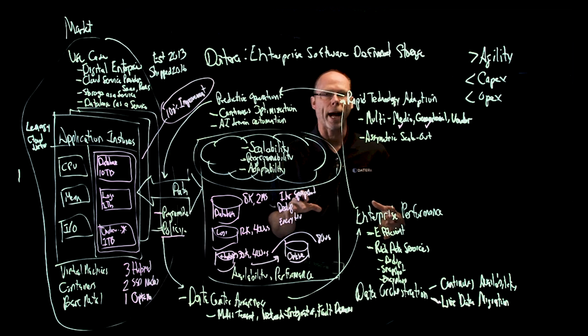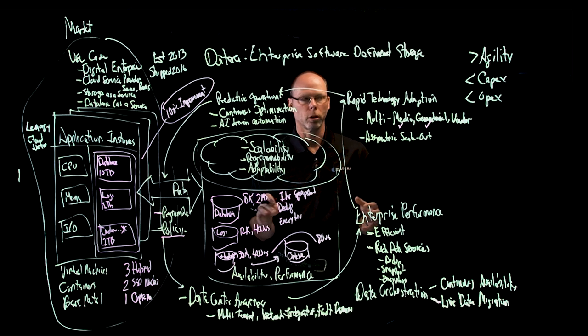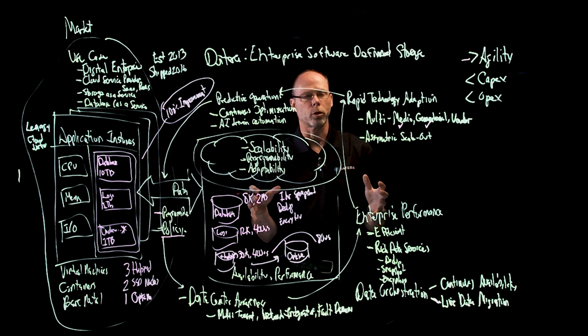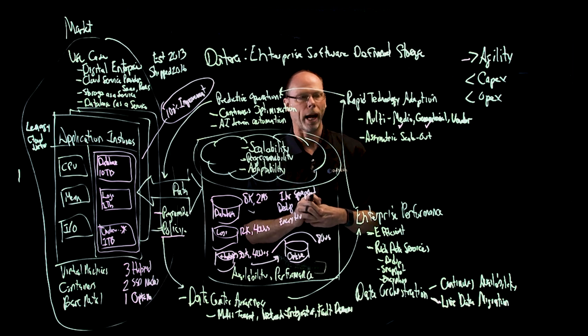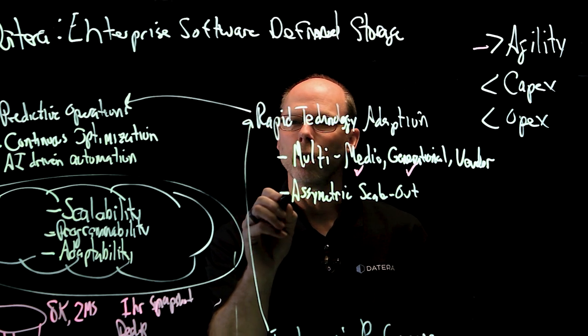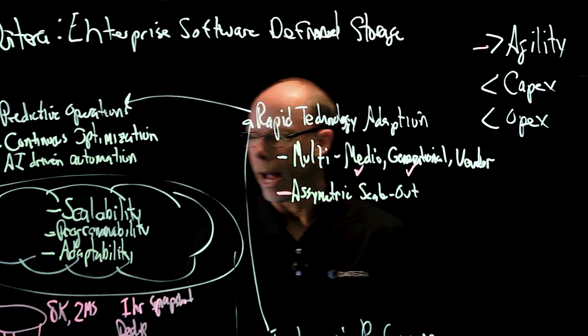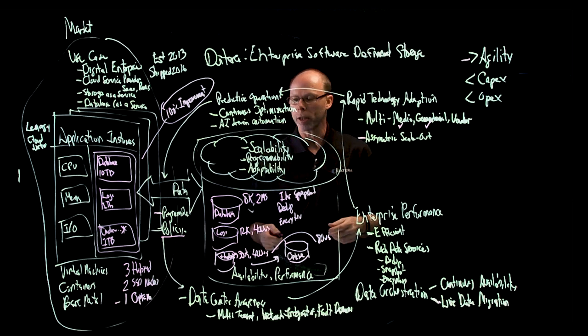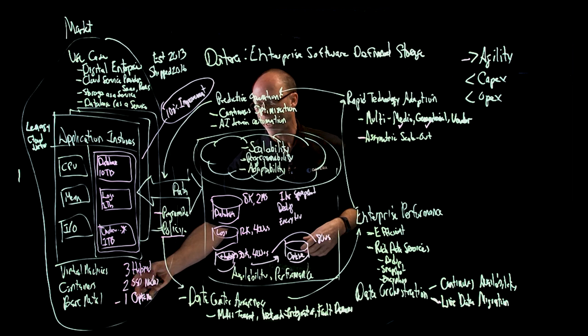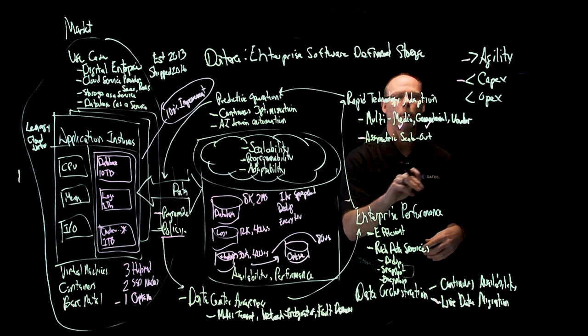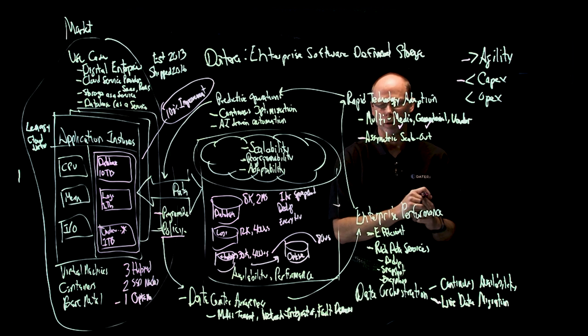So now I want to reflect back on our value propositions. In terms of agility, think about how quickly I was able to adapt this new technology to take advantage and improve my application performance with new media and new generation. I used my asymmetric scale out. I only had to add one node of this technology to get this benefit. In other scale out architectures, I typically would have had to add three or four or five nodes. So I saved significant capex by being able to use a single node of this technology.